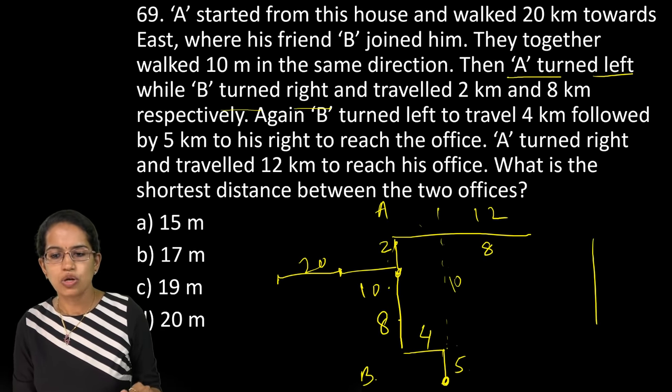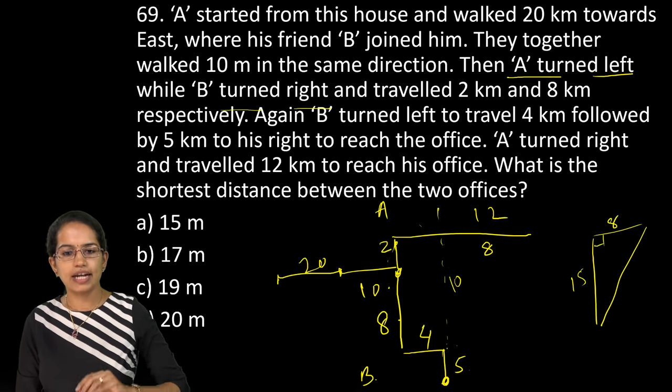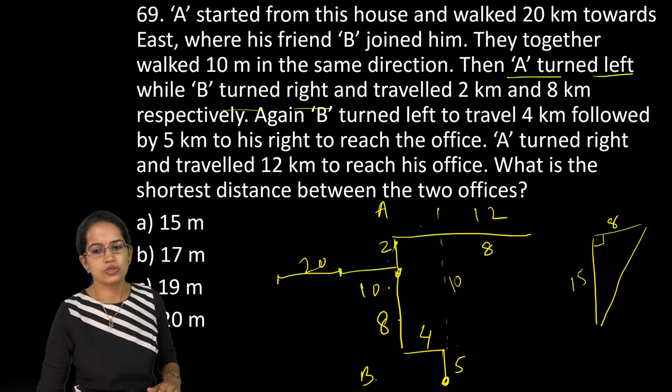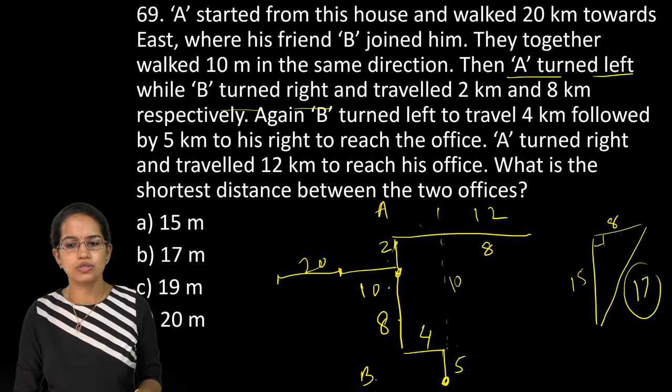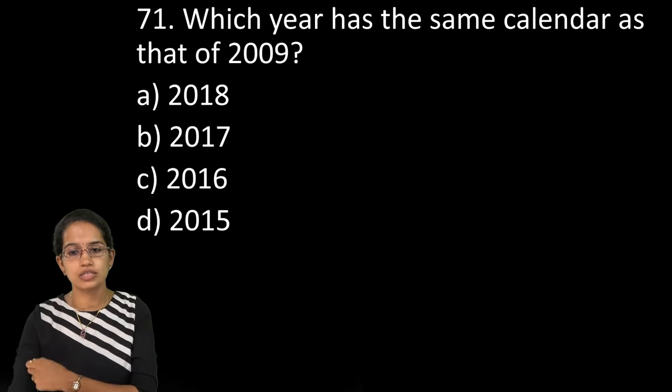Now from here, A would travel right and go 12 km. So this would be 12. Now this is 4. I marked the line for 4 here. So what remains is 8 here. And this becomes 2 plus 8, that is 10. 10 plus 5, that is 15. So I have to find out the shortest distance. So this is 8, this is 15. Right angle triangle. I apply the Pythagoras theorem. I get the answer as 17. So 17 would be my answer.